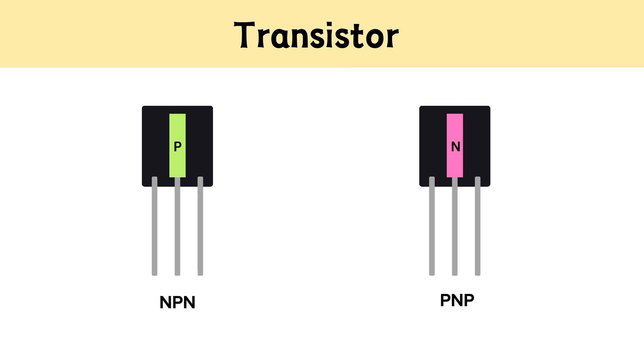In an NPN transistor, a P-type semiconductor is sandwiched between two N-type semiconductors, while in a PNP transistor, two P-type semiconductors are sandwiched between N-type semiconductors.